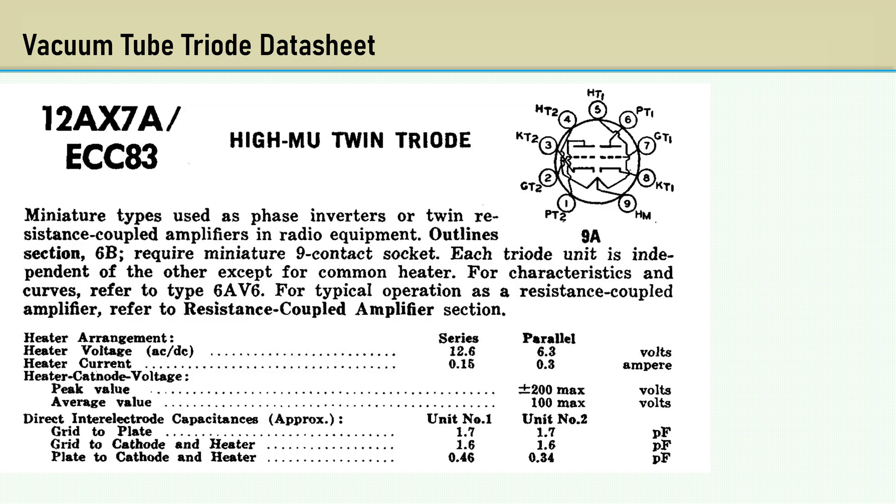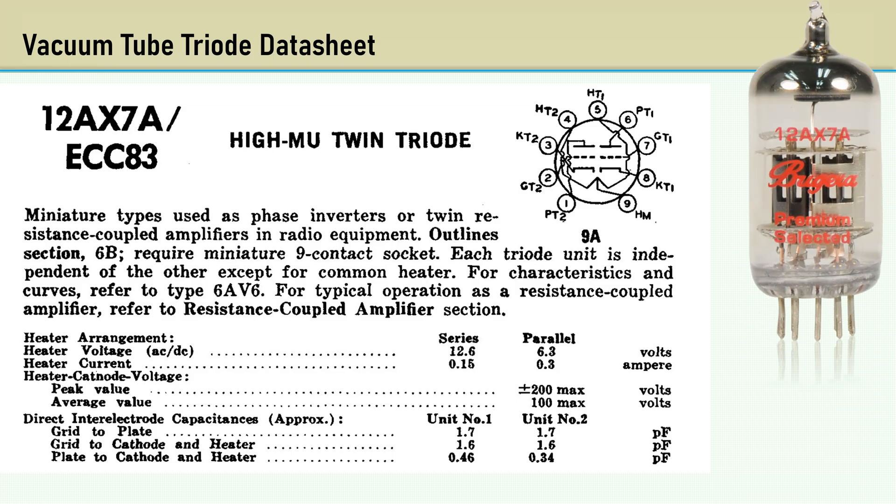Let's look at those parasitic capacitance values. Since Mr. Miller did this with vacuum tubes, let's do it with a vacuum tube example. In this case, the ubiquitous 12AX7A. Here are the inter-electrode capacitances between the grid-to-plate and grid-to-cathode. The grid-to-plate capacitance is 1.7 picofarads, and the grid-to-cathode capacitance is 1.6 picofarads.